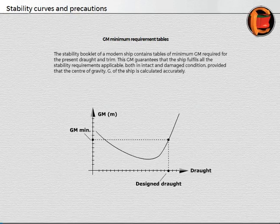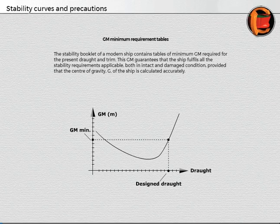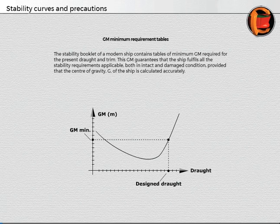The stability booklet of a modern ship contains tables of minimum GM required for the present draft and trim. This GM guarantees that the ship fulfills all the stability requirements applicable, both in intact and damaged condition, provided that the center of gravity, G, of the ship is calculated accurately.